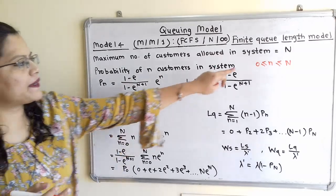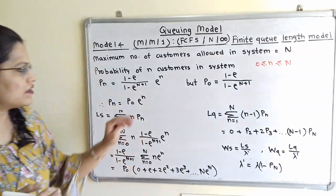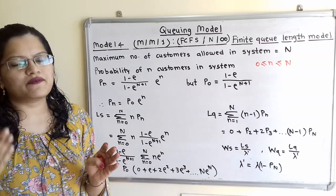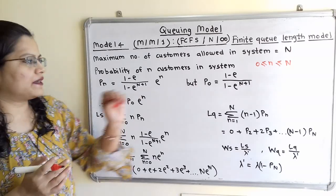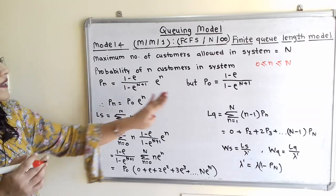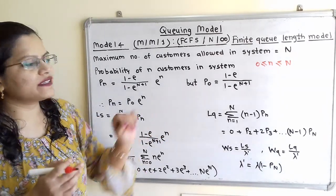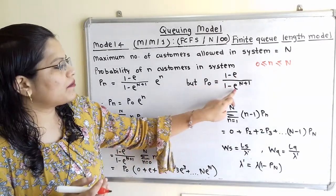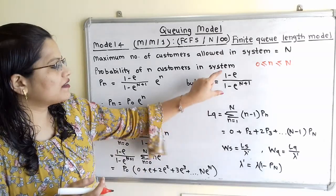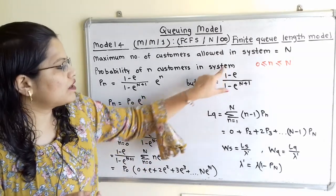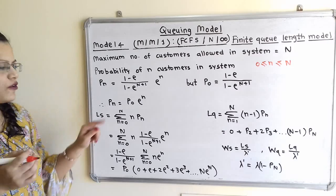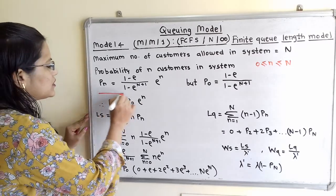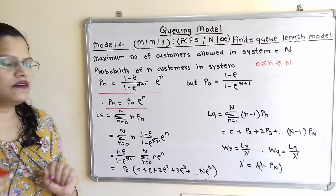Since P(0) = (1 − ρ) / (1 − ρ^(N+1)), we can substitute this to write P(n) = P(0) × ρ^n. So we can use either the first formula or the second formula to find the probability of n customers in the system.